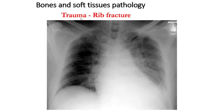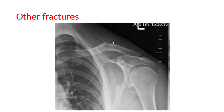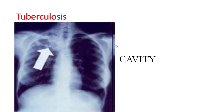Bony and soft tissue pathology: rib fractures may be found on chest X-ray — three or four rib fractures visible here. Clavicle fractures, such as left-side clavicle fracture, can also be identified on chest X-ray.